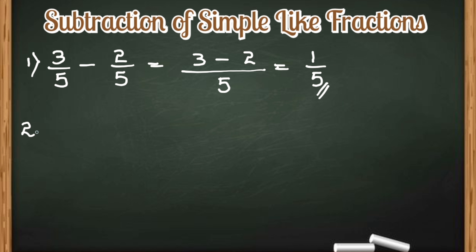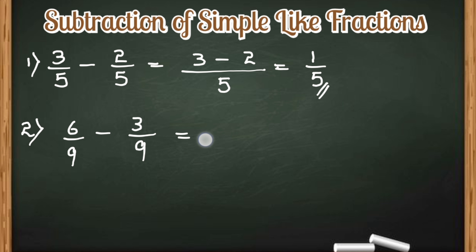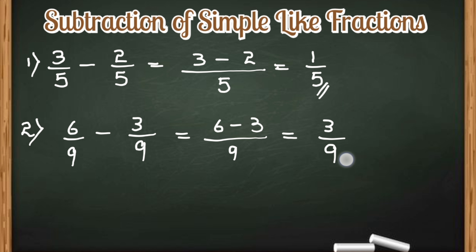Now let us take the next example. Here I have written 6 by 9 minus 3 by 9. Again, the denominators are the same, so only the numerators will be subtracted and the denominator will remain the same. The numerators: 6 minus 3 is 3, so we get 3 by 9 as our answer.